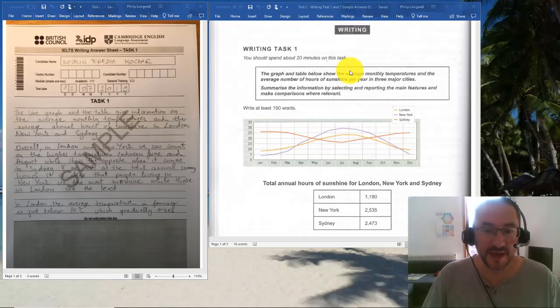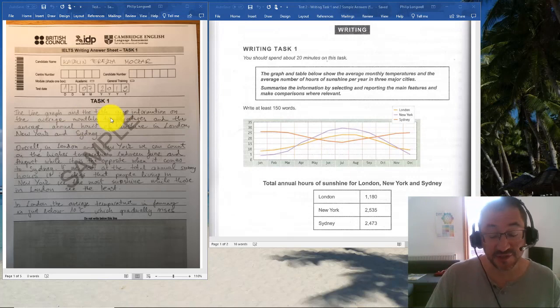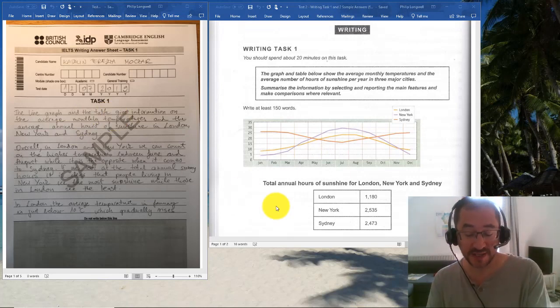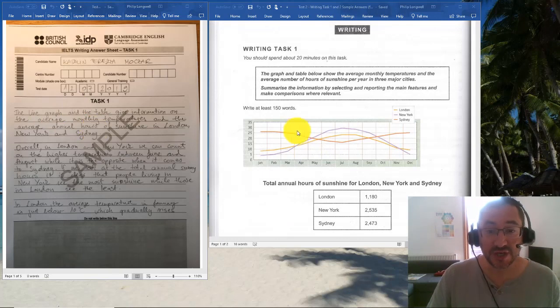With any task 1—line chart, bar chart, pie chart, anything that has graphical representation, even a table—we're going to have an introductory sentence which tells us what does this line chart or pie chart or table show or illustrate. We can keep it simple for the first sentence.